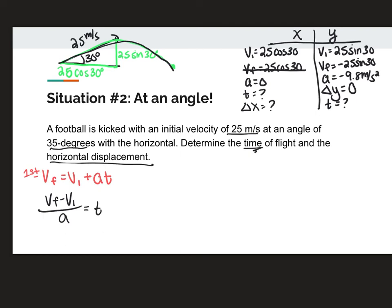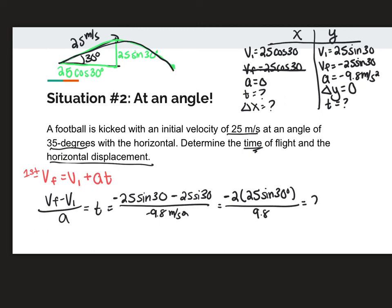This is the moment where our direction really matters. I have negative 25 sine 30 minus 25 sine 30 over negative 9.8. Now, what this technically means is that this is two, so negative two of this 25 sine 30 degrees. And then when I do the math here, I'm going to get 2.55 seconds for my time. Now, as we know, in my X and my Y direction, time is always the same.